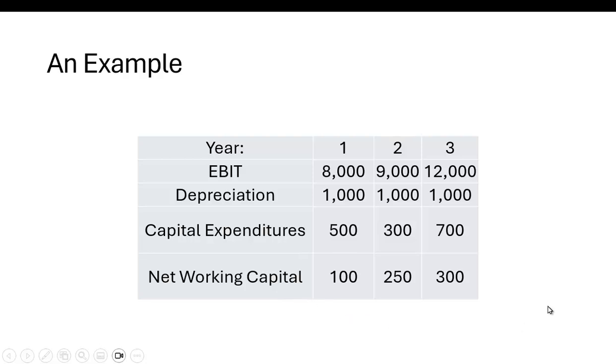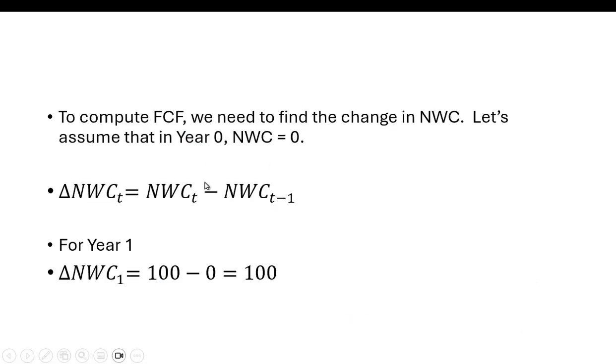But what we need is we need the change in net working capital. So we have to calculate this change. And the change in time period T is going to be the net working capital in period T minus the previous period's net working capital. And to get ourselves started, let's assume that in year zero, net working capital is zero. So the change from year zero to year one is 100 minus zero.